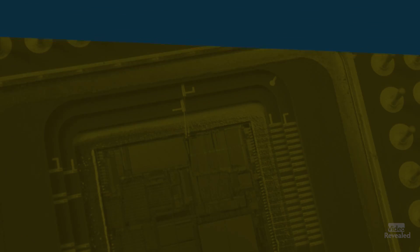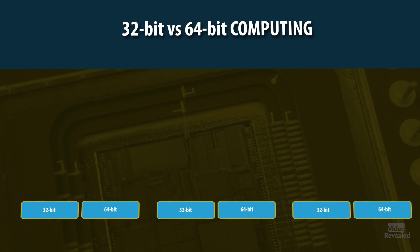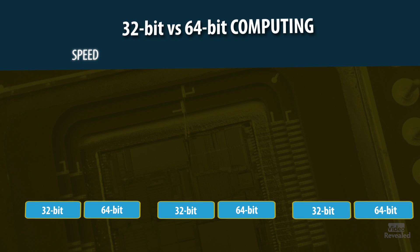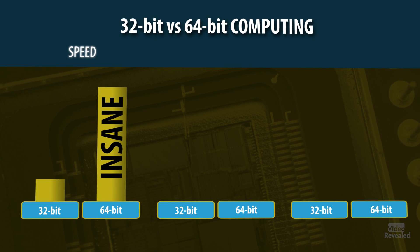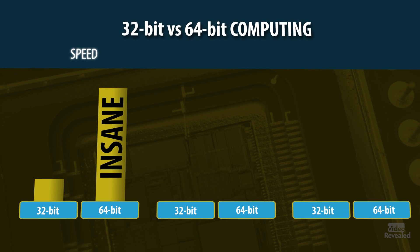Next up is computing. In computing, we're talking about only two values: 32-bit versus 64-bit computing. What is the difference? First of all, it's speed. 64-bit can handle multiple processors and send a lot more information. And how much faster is it? 64-bit computing blows 32-bit out of the water by a huge margin.